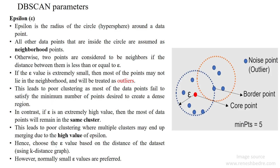A high epsilon value also leads to a poor clustering approach. To avoid poor clustering, we should choose the epsilon value based upon the distance distribution of the dataset. We can use a k-distance graph to select a better epsilon value — mostly a small, but not the smallest, value is selected for better clustering.